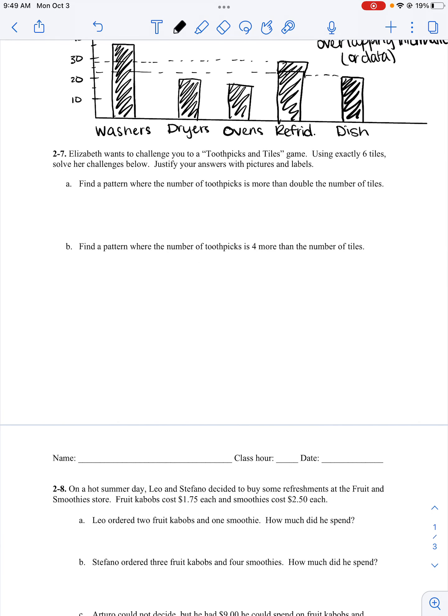Okay. Problem 2.7. Elizabeth wants to challenge you to a toothpicks and tiles game. Using exactly six tiles, solve her challenges below. Justify your answers with pictures and labels. The first one, we have to have more than double the number of tiles and I have to have six tiles. So two, three, four, five, six. I'm just going to try this. So I have six tiles. Double would be 12, so it has to be more than double. So one, two, three, four, five, six, seven, eight, nine, ten, eleven, twelve, thirteen, fourteen. That one works.